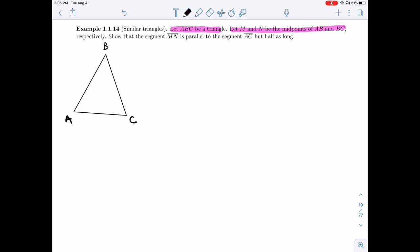Let M and N be the midpoints of AB and AC. So midpoint, halfway. Here I'm going to put M, M is the midpoint of AB, and N is the midpoint of AC. Show that the segment MN, this segment here, is parallel to the segment AC but half as long.